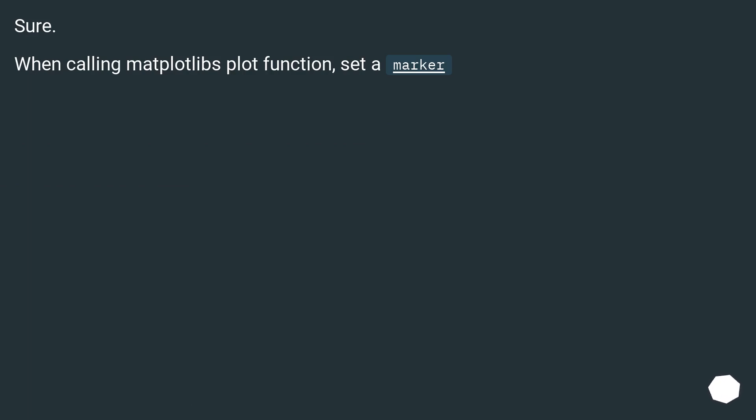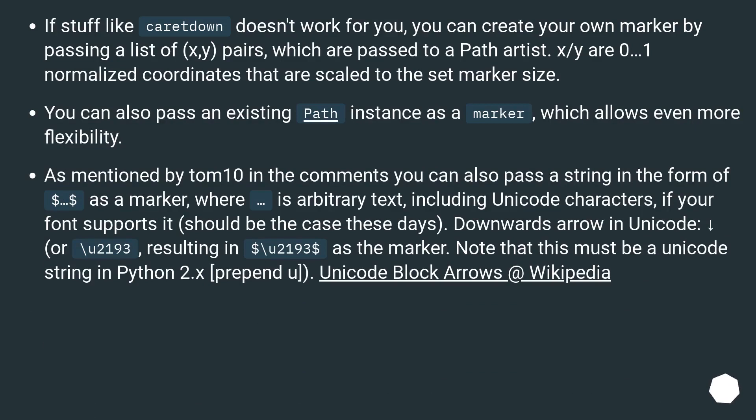Sure. When calling Matplotlib's plot function, set a marker. If stuff like caret down doesn't work for you, you can create your own marker by passing a list of x, y pairs, which are passed to a Path artist. X, Y are 0 to 1 normalized coordinates that are scaled to the set marker size.